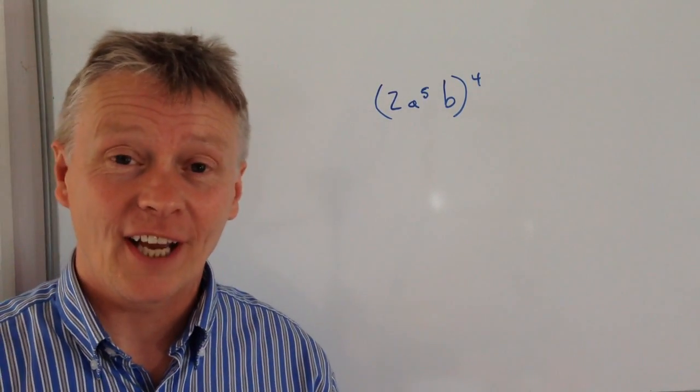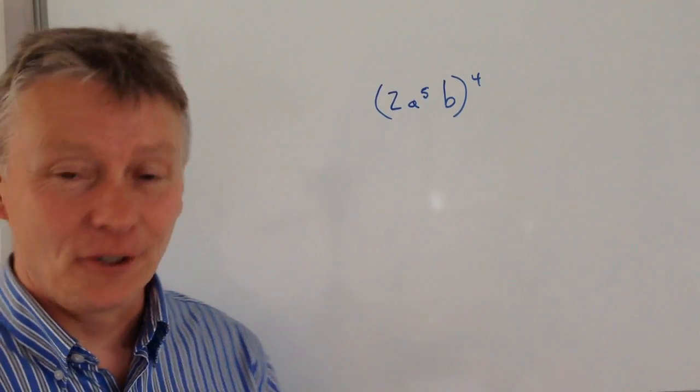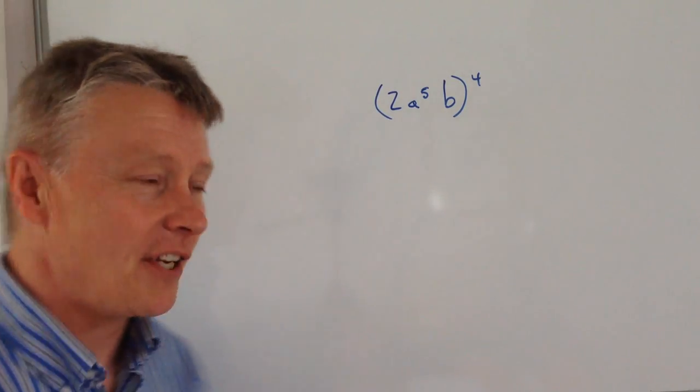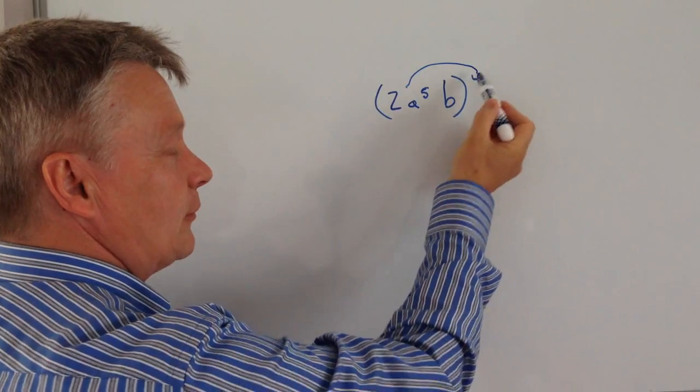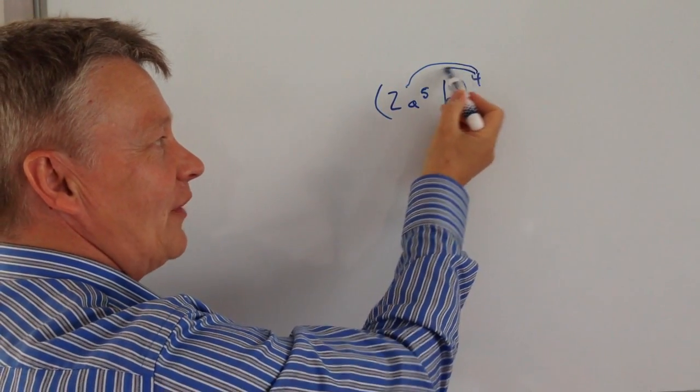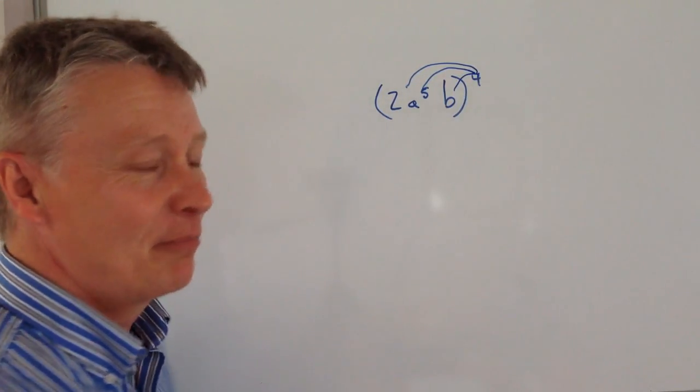Hi, in this video we're going to look at simplifying this algebraic expression. What it's asking us to do is quadruple the value of 2, the value of a to the power of 5, and the value of b.